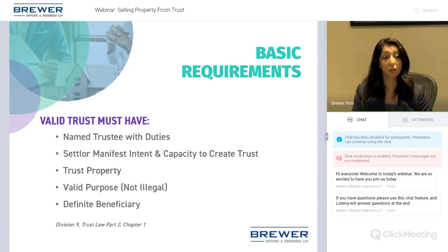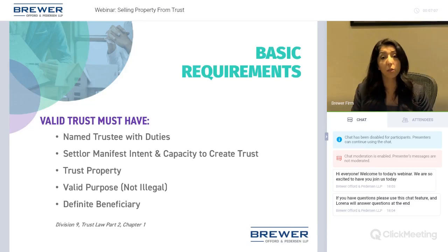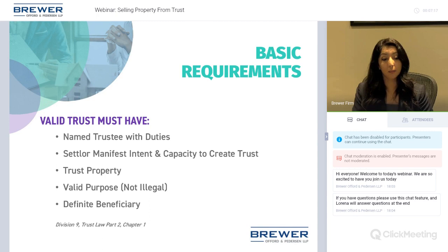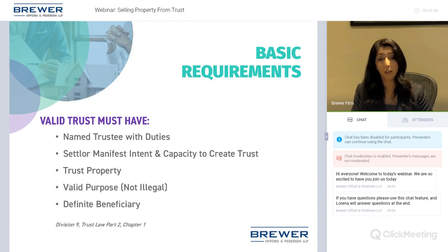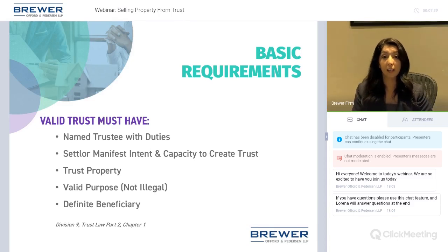Beneficiaries can include children, grandchildren, or friends. However, the identification must be definitive — saying 'leave my musical instruments to Nick' isn't sufficient because we don't know who Nick is. It should say 'Nick Smith,' and including an address for an adult at their permanent residence further helps define exactly who is meant. A last name is preferred at minimum.